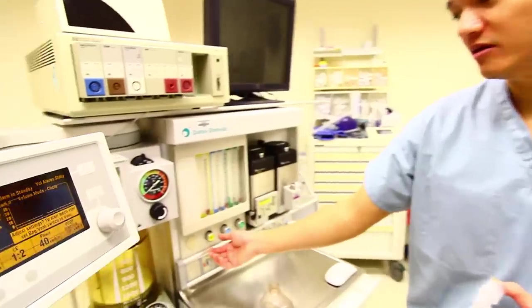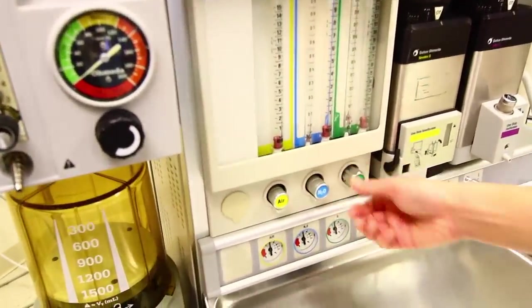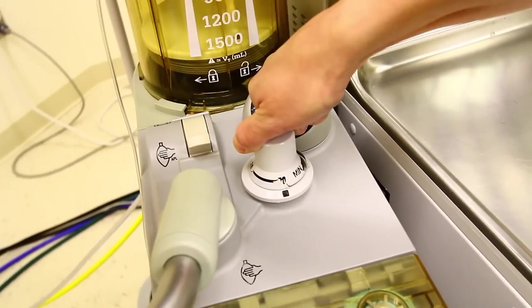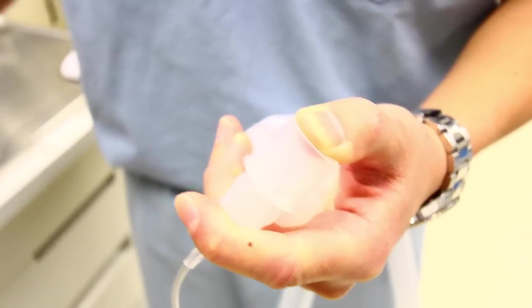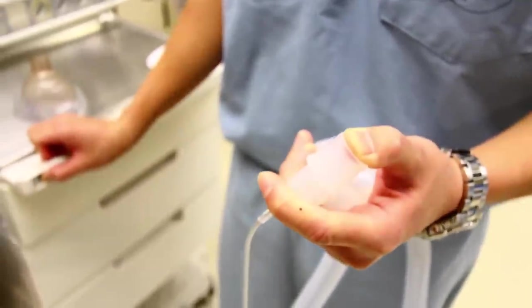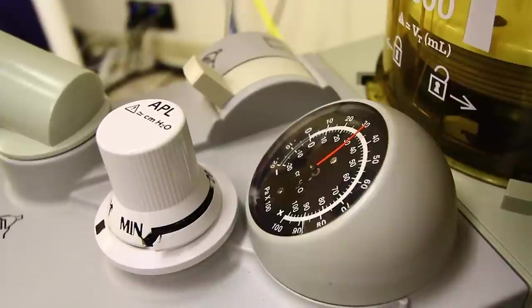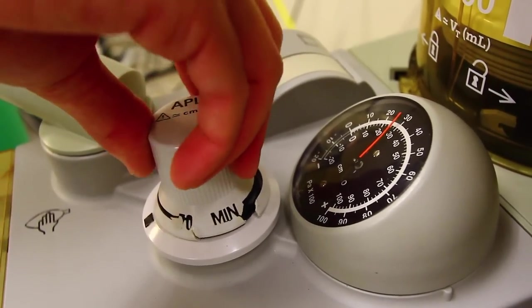The next thing is to perform a leak check of the breathing system. Ensure that all the flows are set to zero or minimum. Close the APL pop-off valve by turning it clockwise. Occlude the Y piece and then use the oxygen flush valve to pressurize the system to 30 centimeters of water. With the system pressurized, verify that it remained pressurized for 10 seconds, then release the pressure by opening the APL pop-off valve.